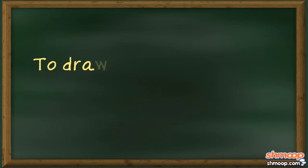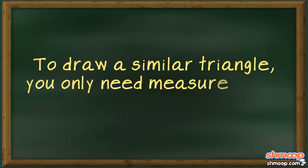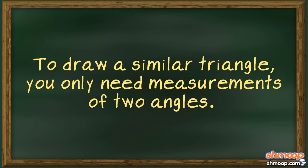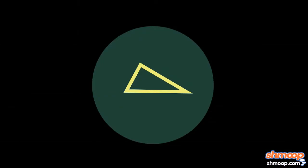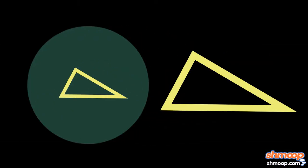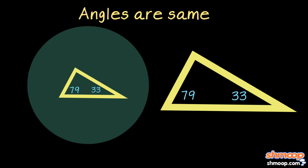when he realized that to draw a similar triangle, you need only measurements of two angles. And that's exactly what he did. Granted, it was a much smaller triangle than the one he was given, but the angles were the same, and that's all that matters.